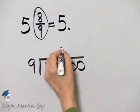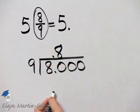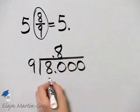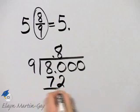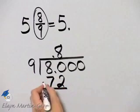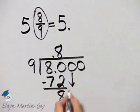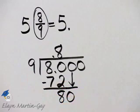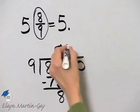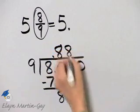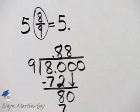How many times does nine divide into 80? Nine times eight is 72, so eight times nine is 72. Watch very carefully because when we subtract, we have a remainder of eight. I'll bring down a zero, and notice I have 80 again.